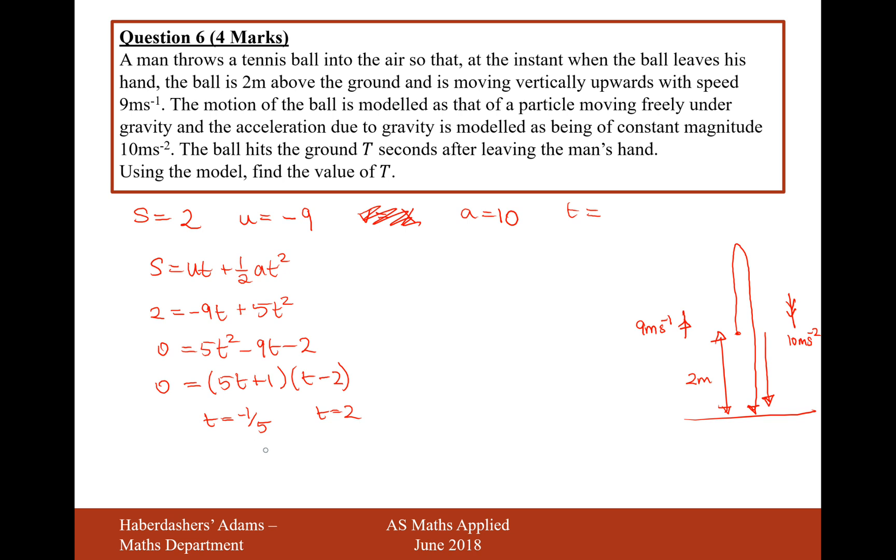Now it's definitely not going to be minus a fifth because that would be travelling backwards in time. But you can see why that minus a fifth solution may have appeared because it may have been if you started the timer 0.2 seconds before and launched it with an initial speed,